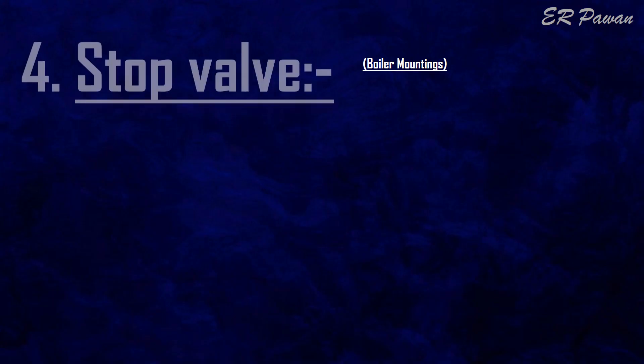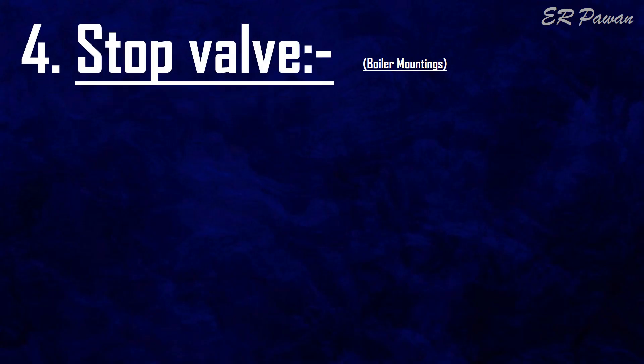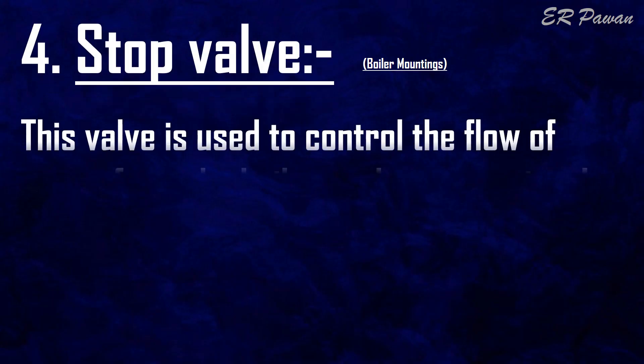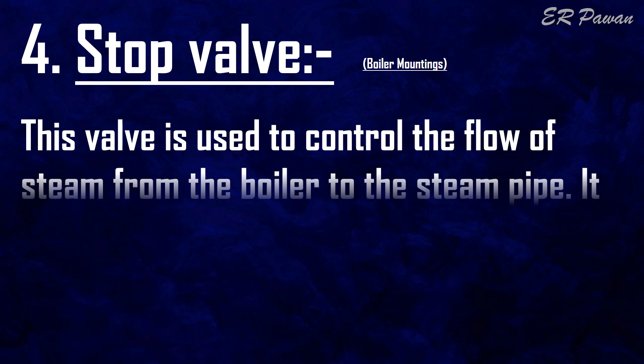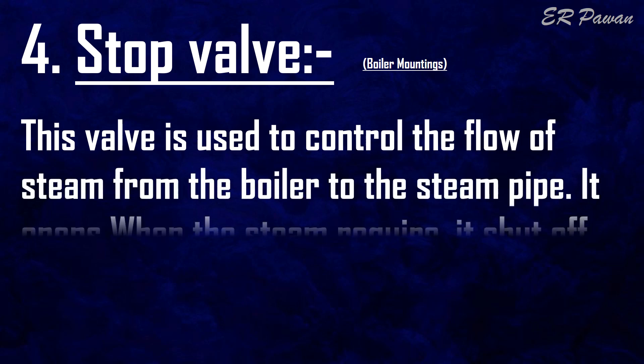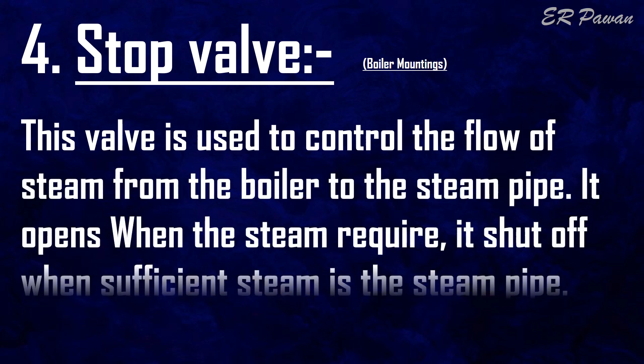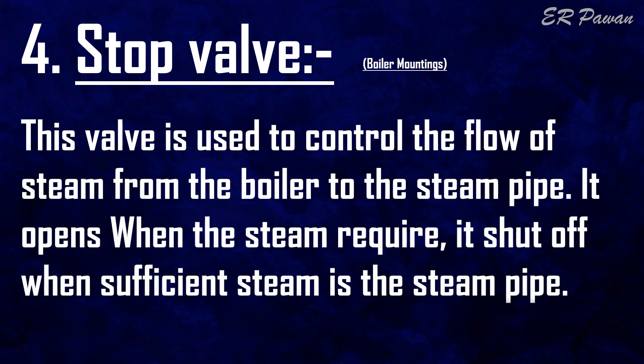Stop valve. This valve is used to control the flow of steam from the boiler to the steam pipe. It opens when steam is required and shuts off when sufficient steam is in the steam pipe.